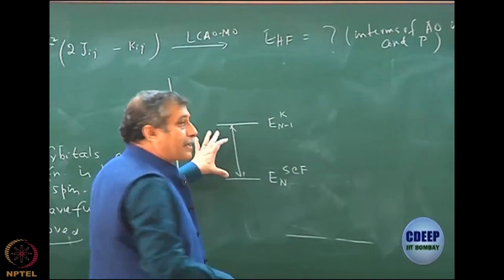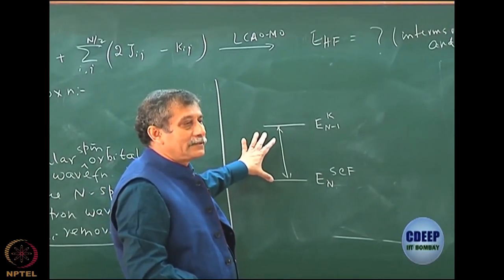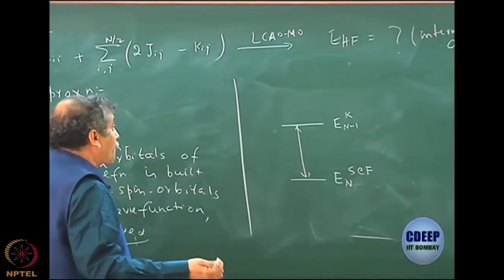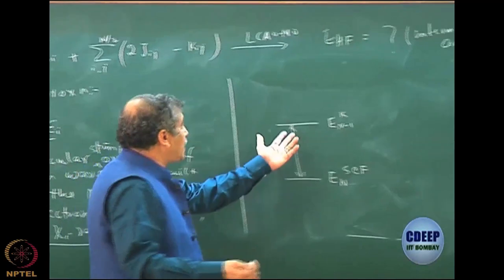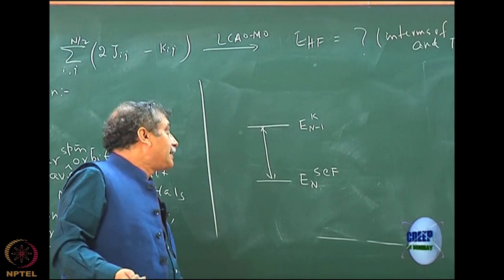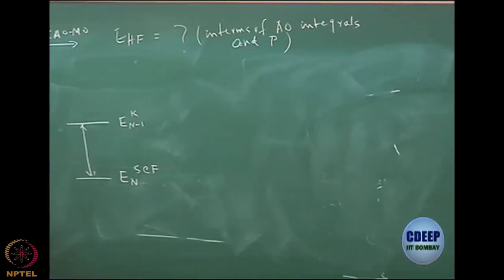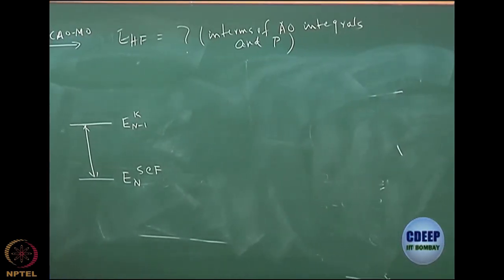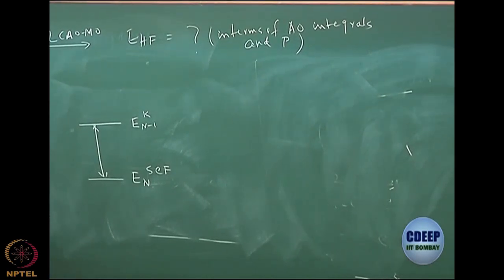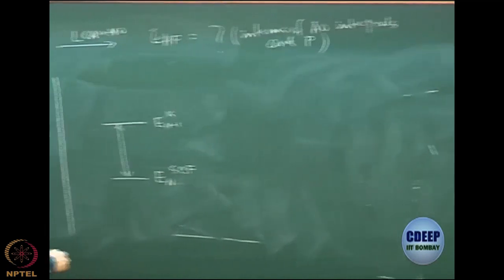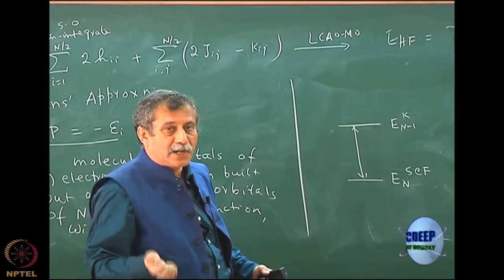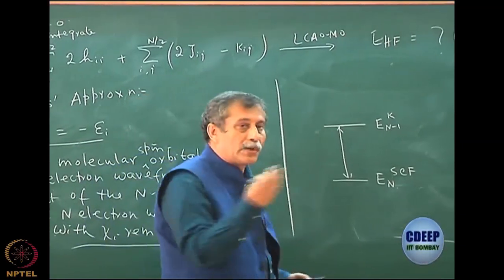What we are saying is that this is pretty close to exact. Let us see why — what are the effects that are missing? One is that this is not the Hartree-Fock of n minus 1 electrons. Each of these are missing what is called the correlation energy. Remember, exact energy is different from Hartree-Fock — it has a correlation energy.